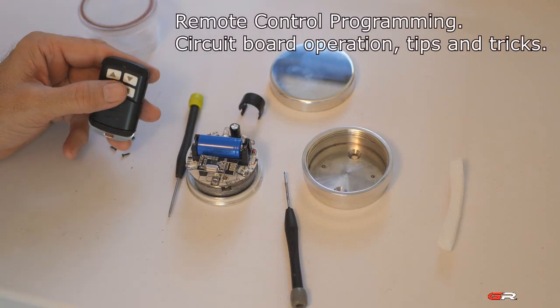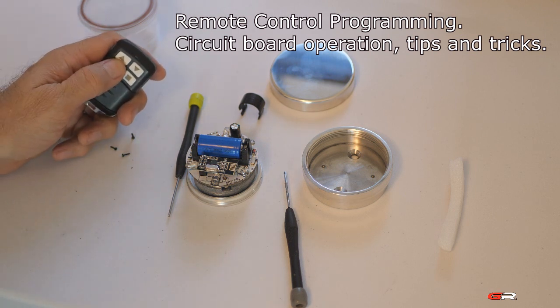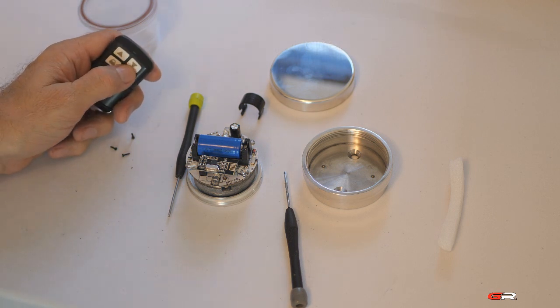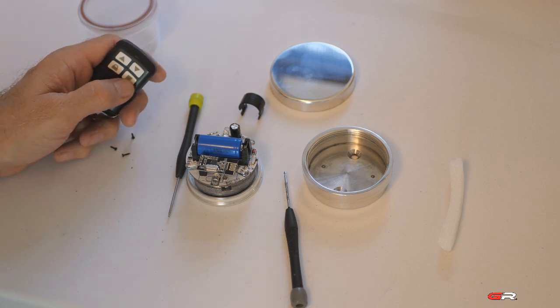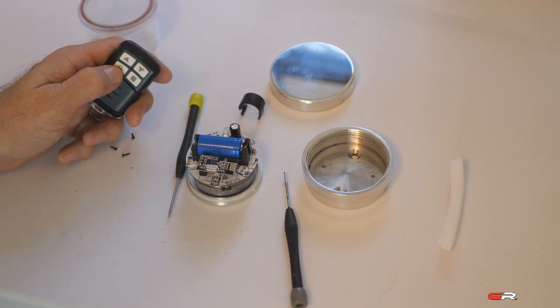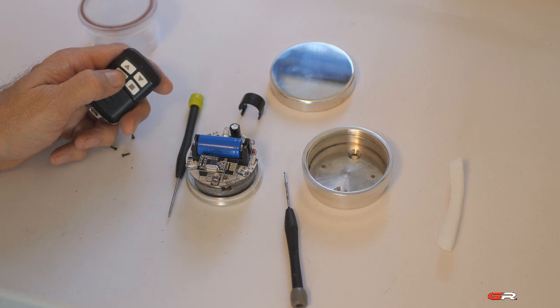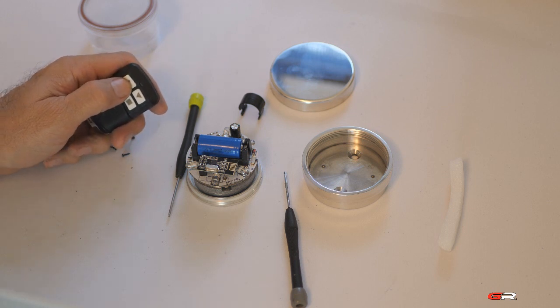Now the way that the remote control works: this is your on button, this is your off button. So up is on, down is off. And then you want to lock in different colors on the remote control. So let's press this button and see if this is paired to this remote control.